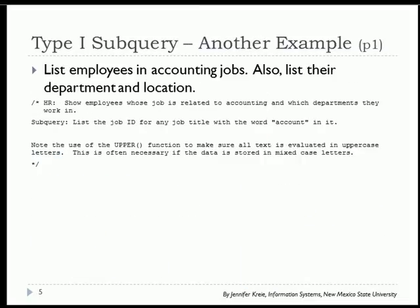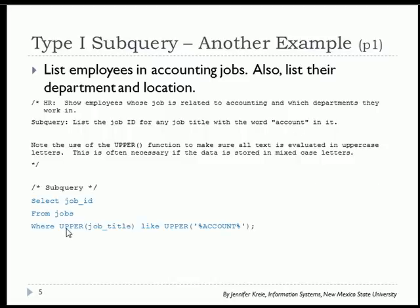Let's look at another example: list employees in accounting related jobs and show their department and location. The key in working with subqueries — whether type 1, type 2, or inline queries — is how you decompose the problem. We want to show employees whose job is related to accounting. In the subquery, we find what job ID is associated with job titles containing the word 'account'. We use the upper function in the where clause: SELECT job_ID FROM jobs WHERE UPPER(job_title) LIKE UPPER(...).